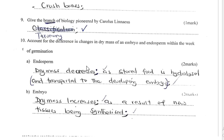Question 10: Account for the difference in change in dry mass of an embryo and endosperm during germination. For the endosperm: dry mass decreases as stored food is hydrolyzed and transported to the developing embryo. For the embryo: dry mass increases as a result of new tissues being synthesized.